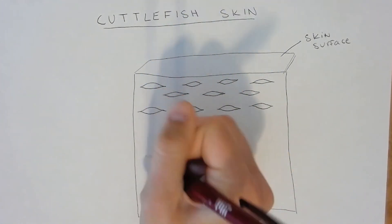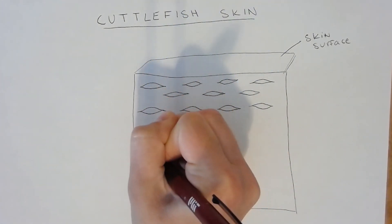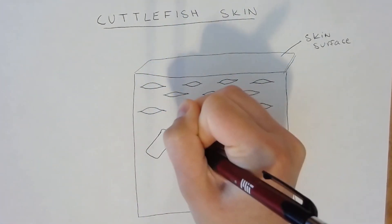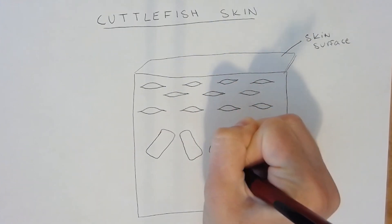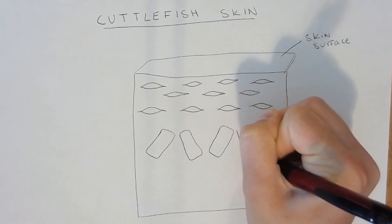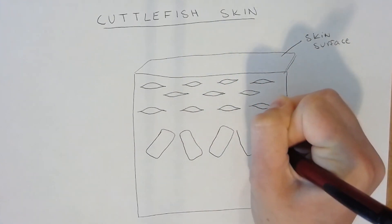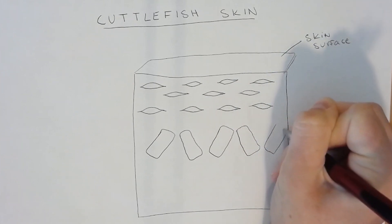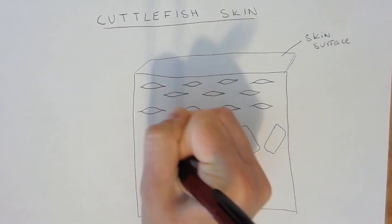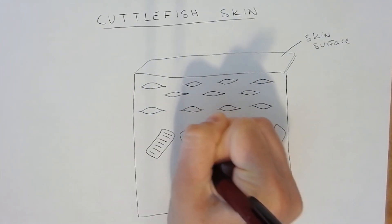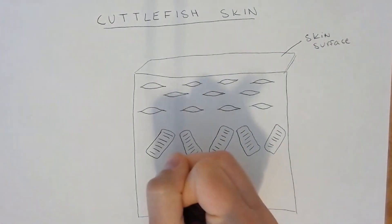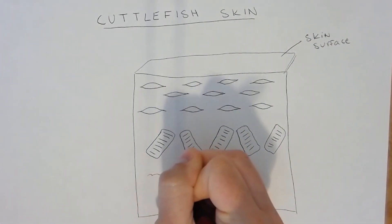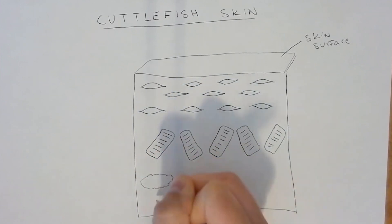You may be wondering how cuttlefish can produce their diverse range of skin patterning using just three colors. Below the chromatophores is a layer of iridophores, which are stacks of thin cells that reflect light, creating different colors and iridescence. The light reflected by these cells even appears to change color based on the angle they are viewed from.